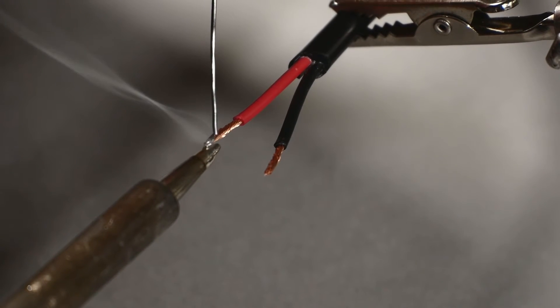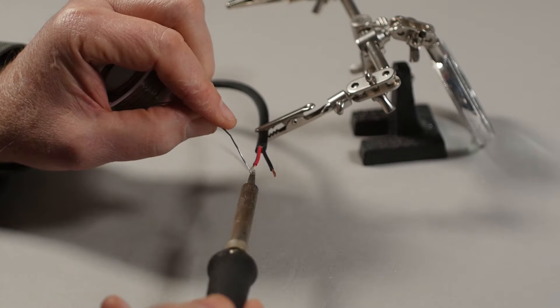Tin the wire ends making sure the solder wicks up the strands but does not distort the insulation.